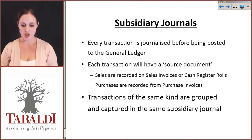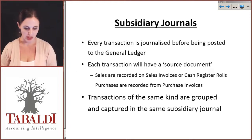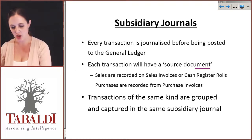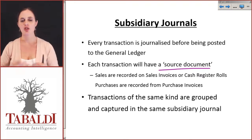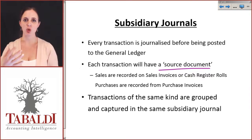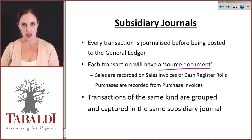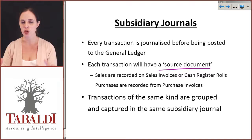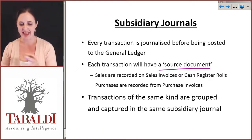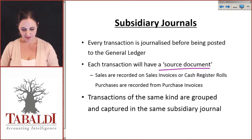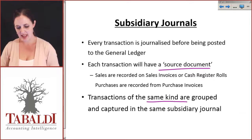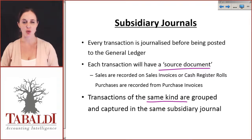Every single transaction is journalized in one or other subsidiary journal before being posted to the general ledger. Every transaction will have a source document — a specific document from which the transaction arises — and all the information we need is recorded on it. We need to capture all those source documents into the system. Transactions of the same kind are grouped together, making them easier to deal with.